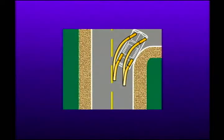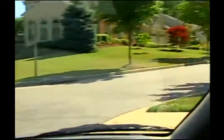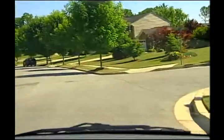In making the turn, we need to allow for the fact that the rear wheels track well inside the front wheels. We need to round out the turn so that the rear wheels clear the corner. Let's see the whole turn from the middle of the lane, around the corner, into the middle of the new lane, and straighten out.